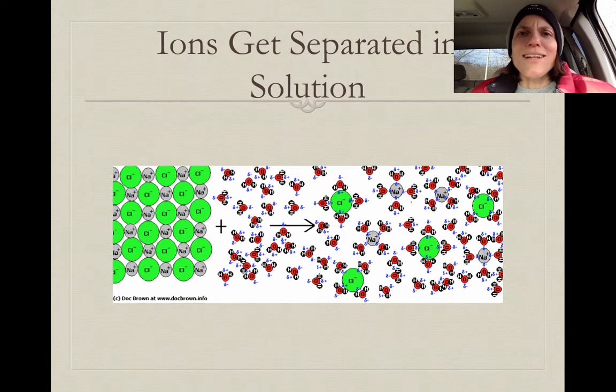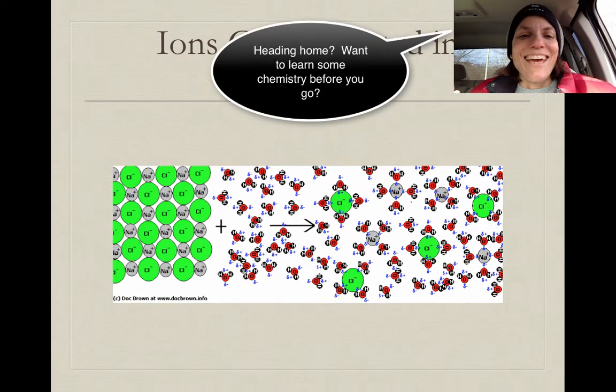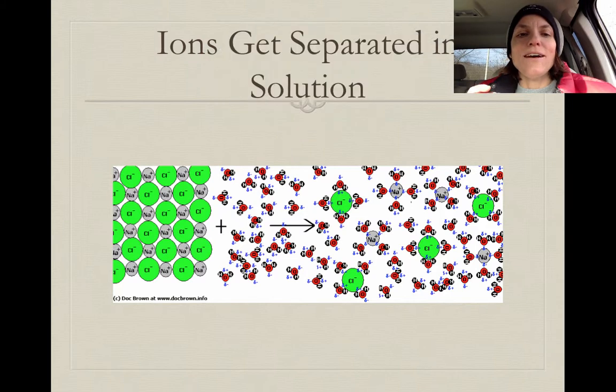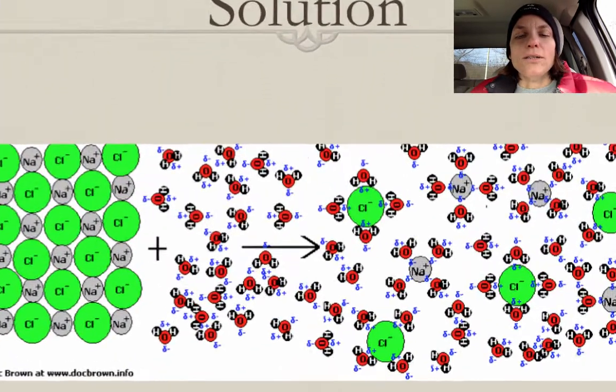Now, when we dissolve that salt in water, we know what happens. You can't see it anymore. And the reason why is because, if you look at this diagram, on the far left, we have a two-dimensional picture of the crystalline structure as a solid. And we're going to add to it water.